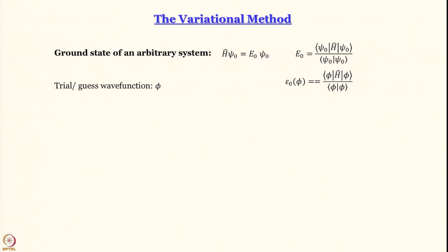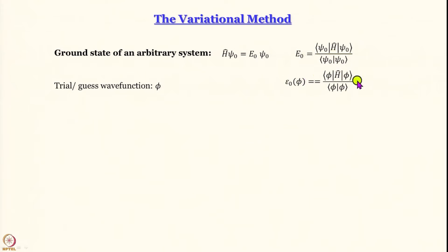The way to treat this is to start with a trial wave function, and that is what we are going to do today and in the next module. We start with some trial wave function and we will see how one can make a guess of that function — for that we work out the functional epsilon_0. The form of epsilon_0 is exactly the same as that of E_0; the only difference is that E_0 is in terms of psi_0 while epsilon_0 is in terms of phi. We will discuss questions like: can I choose a polynomial, a Gaussian, or an exponential?